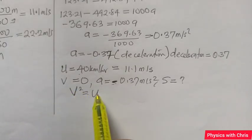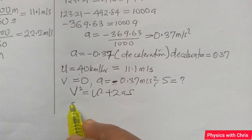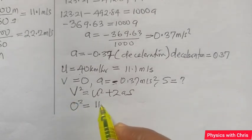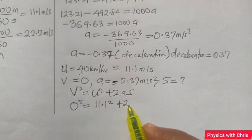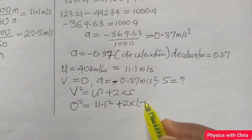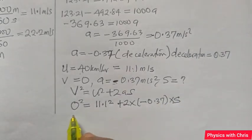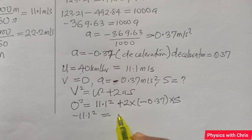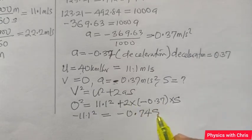We use the same equation: v² = u² + 2as. That gives me 0² = 11.1² plus 2 times -0.37 times distance s. Rearranging, -11.1² equals -0.74, that is 2 times -0.37, times distance s.